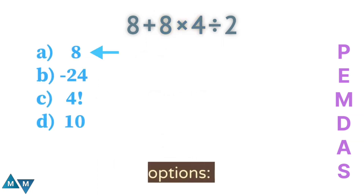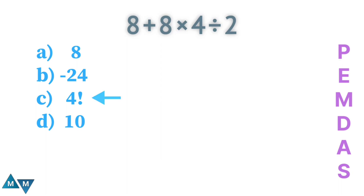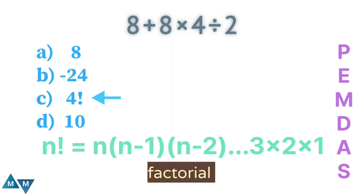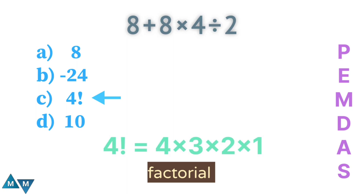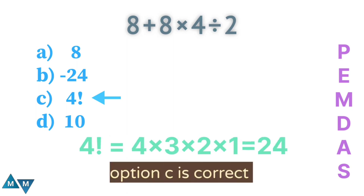Look at the options. The first option, eight, is incorrect. The second, minus 24, is also incorrect because our answer is a positive number. The third option is four factorial. When a number has this exclamation mark, we call it a factorial. Four factorial equals four times three times two times one, which gives 24. So option C is our final answer.